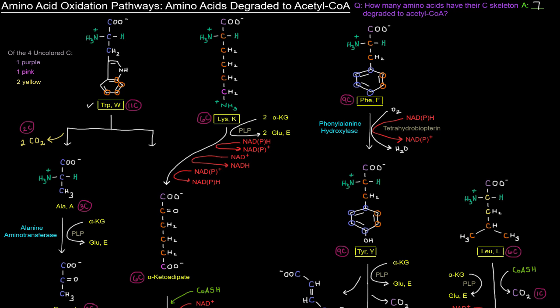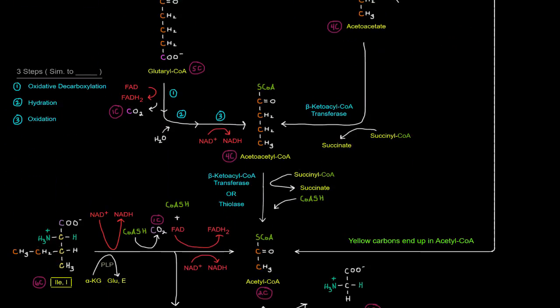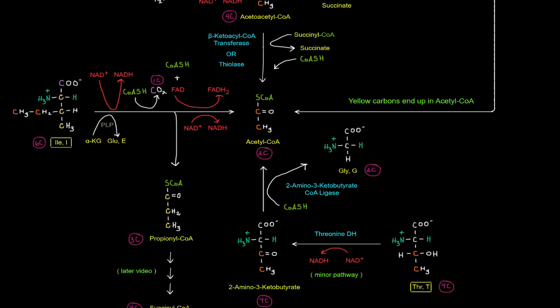So we've got tryptophan 1, lysine 2, phenylalanine 3, tyrosine 4, leucine 5, isoleucine 6, and threonine 7.